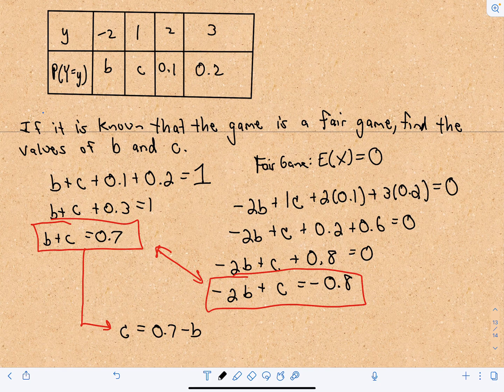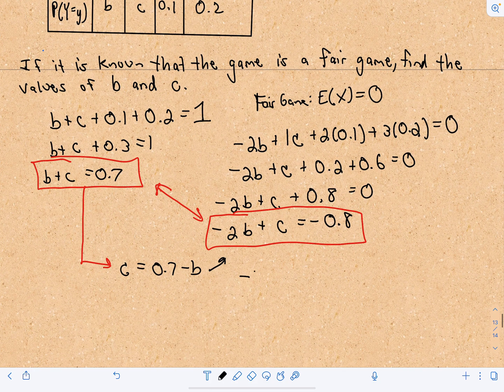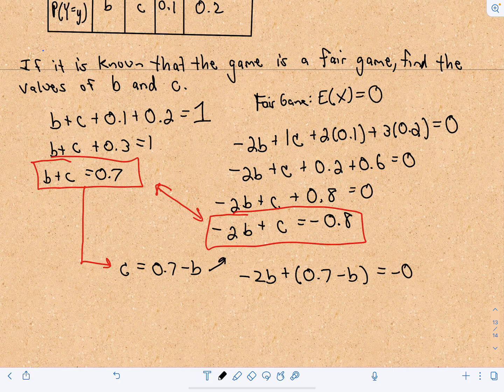And now I'm going to substitute that into this equation. So that's going to give me negative 2B plus C is going to be 0.7 minus B equals negative 0.8.